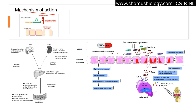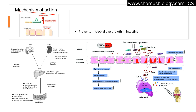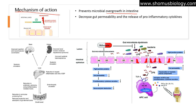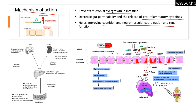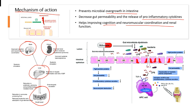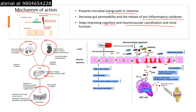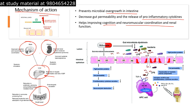The mechanism of action of rifaximin involves several areas. It prevents microbial overgrowth in the intestine, decreases gut permeability, and decreases the release of pro-inflammatory cytokines, so destruction of self-tissue can be inhibited. It also helps improve cognition and neuromuscular coordination, as well as renal function. So this antibiotic works on the liver, brain, kidney, and gut. In the gut, it targets and kills overgrown bacteria while allowing good bacteria to survive.